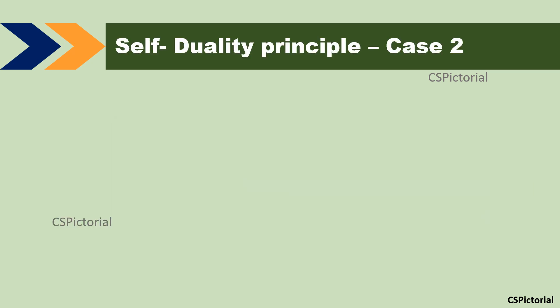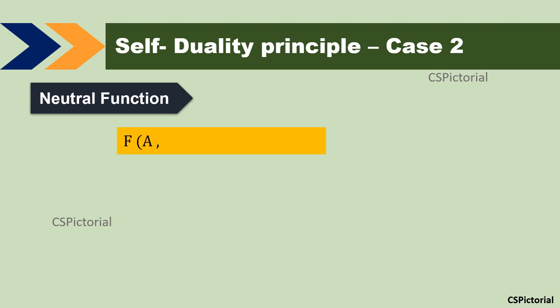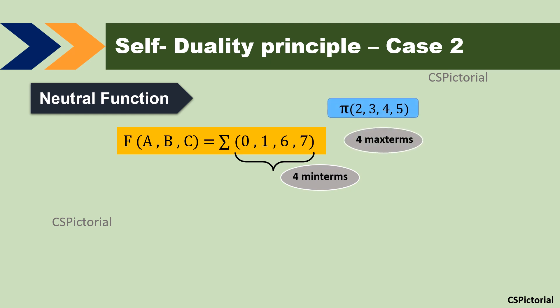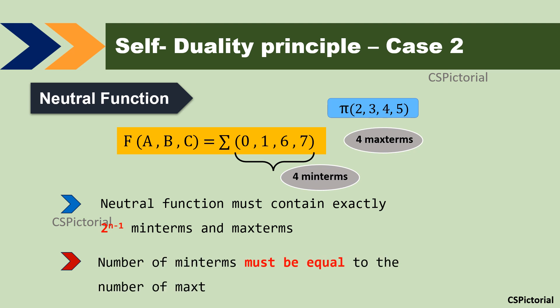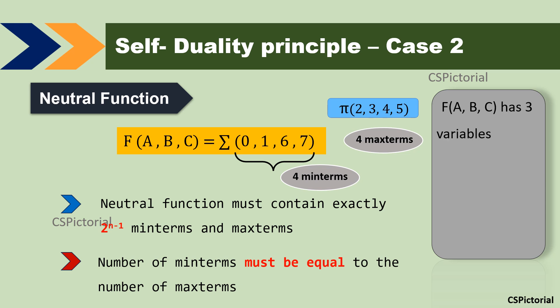The first condition of self-duality is that the Boolean function should be a neutral function. For example, F of a, b, c equal to summation(0, 1, 6, 7). Here 0, 1, 6, and 7 are the minterms, so this function has four minterms. The terms not present are pi of 2, 3, 4, 5 — four maxterms. A neutral function must contain exactly 2^(n-1) minterms and maxterms, and the number of minterms must equal the number of maxterms. Since this is a three-variable function, 2^(3-1) equals 4. The given function satisfies this condition with exactly four minterms and four maxterms, so this is a neutral function.